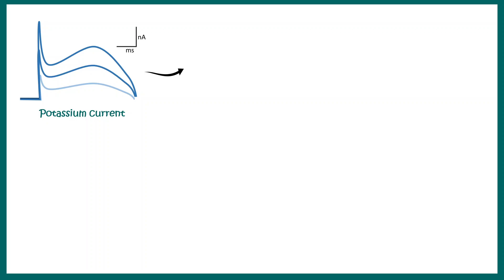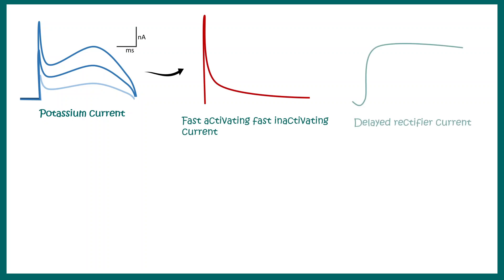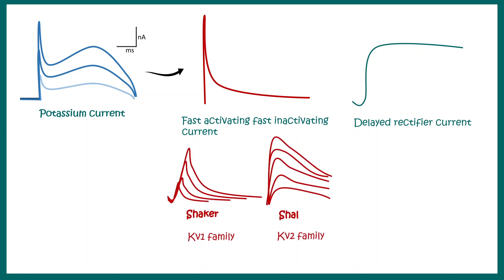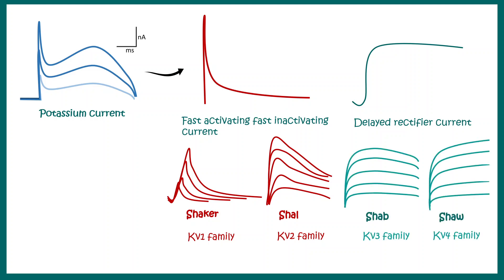The potassium current recorded from KV channels has two components: a fast-activating and fast-inactivating current, and a delayed rectifier current. Different types of potassium channels have these characteristic waveforms — shaker and shal, which are the mammalian KV1 and KV2 families, have fast-activating and fast-inactivating kinetics. In contrast, shab and shaw, corresponding to KV3 and KV4 families in Drosophila, have relatively slower kinetics, meaning they take more time to close.